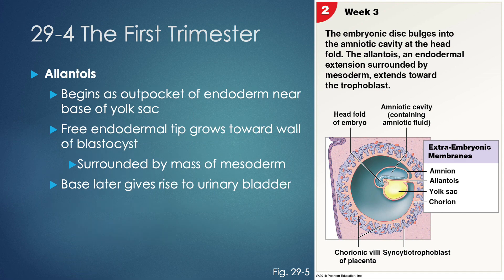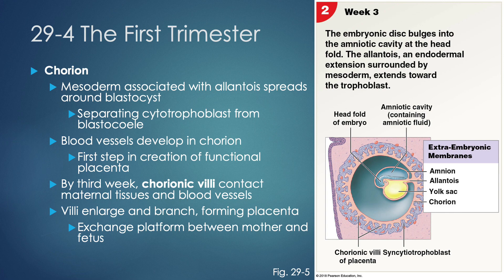The allantois starts as an outpocket of endodermal derivative tissue near the base of the yolk sac. The free endodermal tip grows toward the wall of the blastocyst and becomes surrounded by mesodermal tissue. Later, its base gives rise to the urinary bladder. The chorion forms when the mesoderm associated with the allantois spreads around the blastocyst, separating the cytotrophoblast from the blastocyst. Blood vessels develop in the chorion — the first step of creating a working placenta. By the third week, chorionic villi reach the maternal tissues and blood vessels, branch out, and form a discrete placenta.